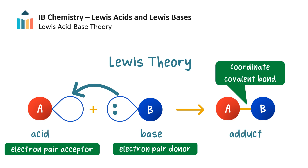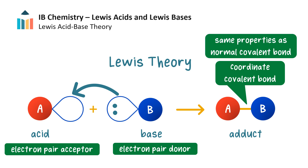In the adduct, a dative or coordinate covalent bond is formed. A coordinate covalent bond is a covalent bond where both electrons are supplied by the same species — in this case, the base. The properties of a coordinate covalent bond — that is, bond length, bond strength, and reactivity — are the same as those of a normal covalent bond.